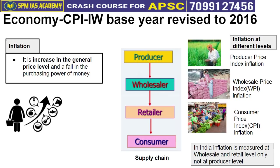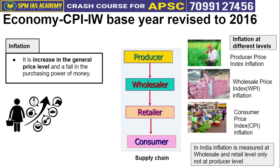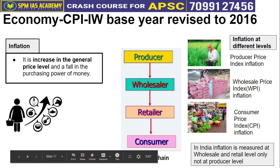Inflation can occur at different levels of the supply chain. At the producer level — say, a farmer — when prices rise, we call it Producer Price Index inflation. Then goods go to the wholesaler, and from there to the retailer. When we consumers buy products from the retailer, if prices rise at that level, we call it Consumer Price Index (CPI) inflation. In India, we primarily measure Wholesale Price Index inflation and Consumer Price Index inflation.